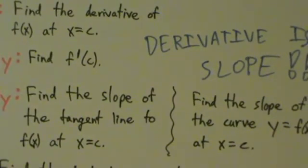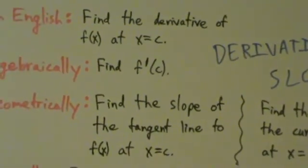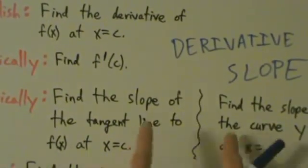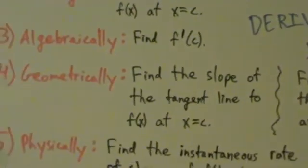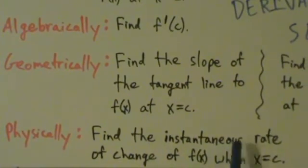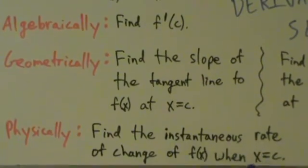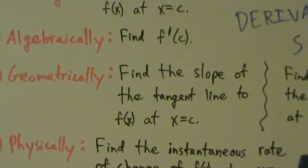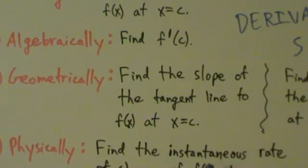That's very important to remember. So that's four, maybe technically five. These are kind of the same thing though. The fifth way is physically, which we also already mentioned: find the instantaneous rate of change of f(x) when x equals c. So here, five or maybe six different ways of saying the same thing.